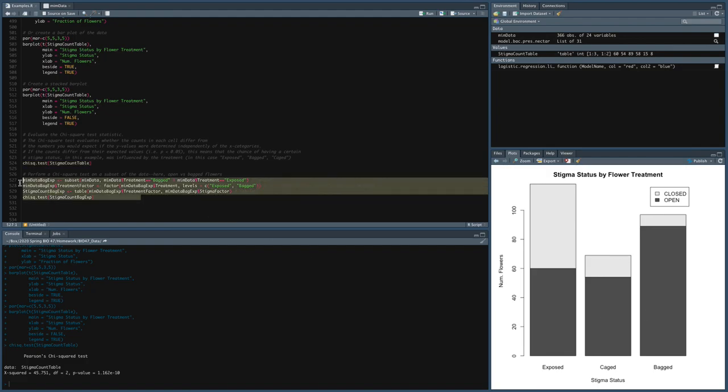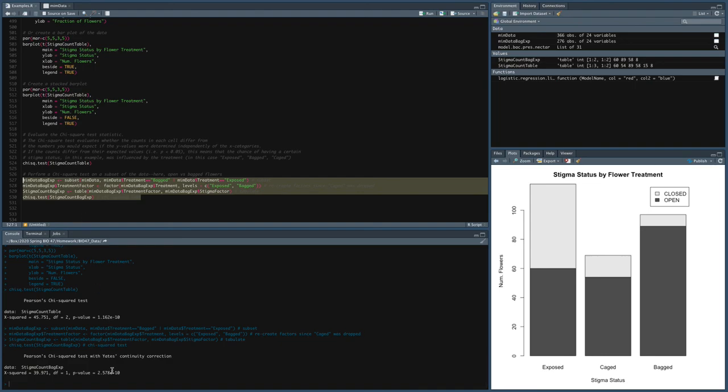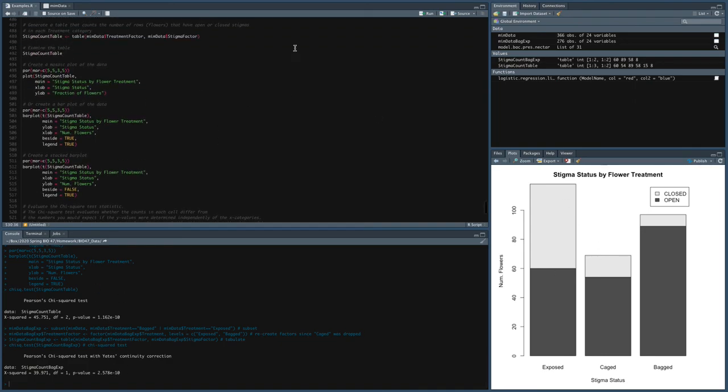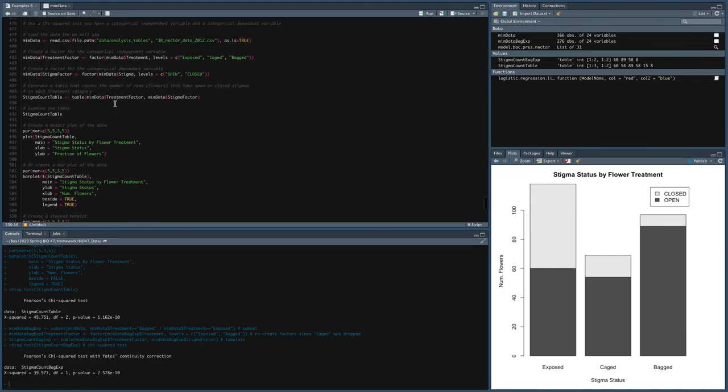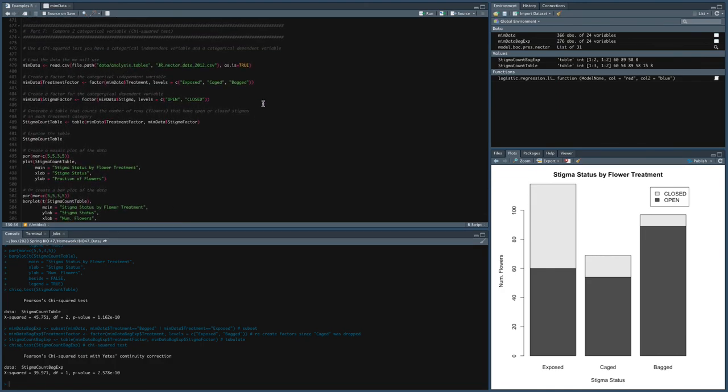We can also do a subset of data on open and bagged flowers. So that's what we're running here, and that's also significant as well. So just walking you through how to do a chi-square test and also factor the data in R based on our examples.R.